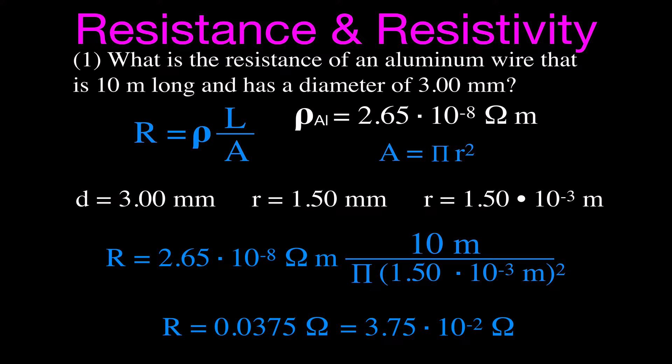The trickiest part is converting the diameter to the radius, remembering to square the radius, but it's pretty straightforward — just plug the numbers in.